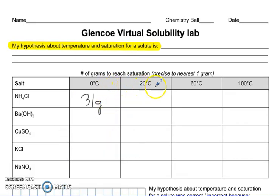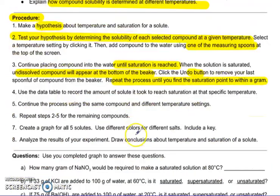And then we want to go through and repeat that process for 20 degrees, 60 degrees, and 100 degrees. So here are my further instructions. Use the data table to record. Continue the process at all the different temperature settings. And then repeat steps two through five for the remaining compounds.